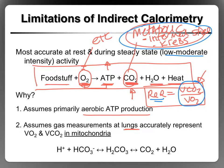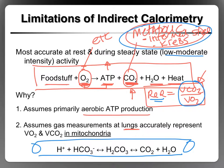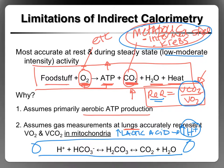Let's explain where that other CO2 comes from. In the bloodstream, there is a chemical buffering reaction occurring. When we produce pyruvic acid at a rate greater than it can be taken up by the mitochondria, we start producing more and more lactic acid, which starts to accumulate. When lactic acid is produced, it releases hydrogen ions — so the more lactic acid we produce, the more hydrogen ions we produce.